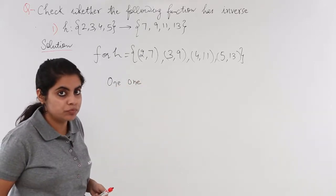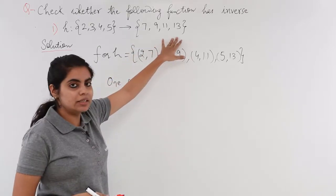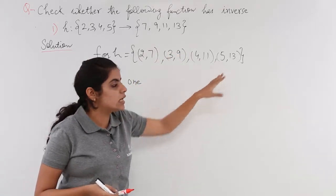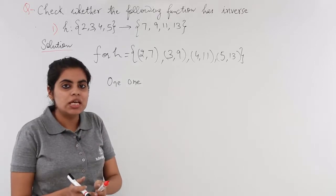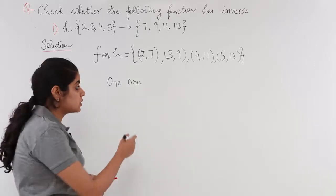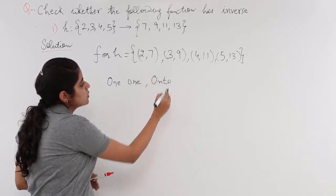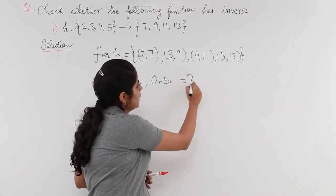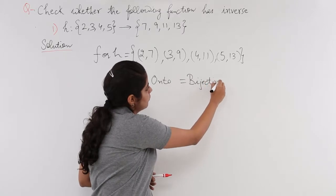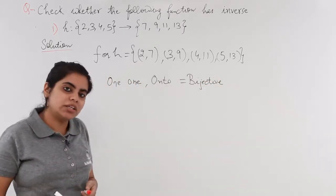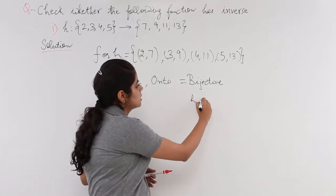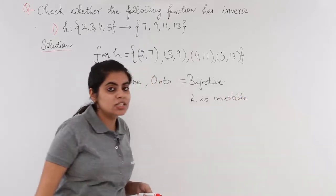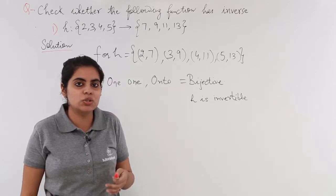Now what about onto? We have the co-domain written here as 7, 9, 11, 13 and with the co-domain all the elements are associated one by one, that means the range is equal to the co-domain. Since the range is equal to co-domain so it is onto also, so it is one-one onto and when a function is one-one onto we say the function is bijective function and when the function is bijective function the function is invertible, that means inverse of the function can exist because the function h is bijective function and so it is invertible.